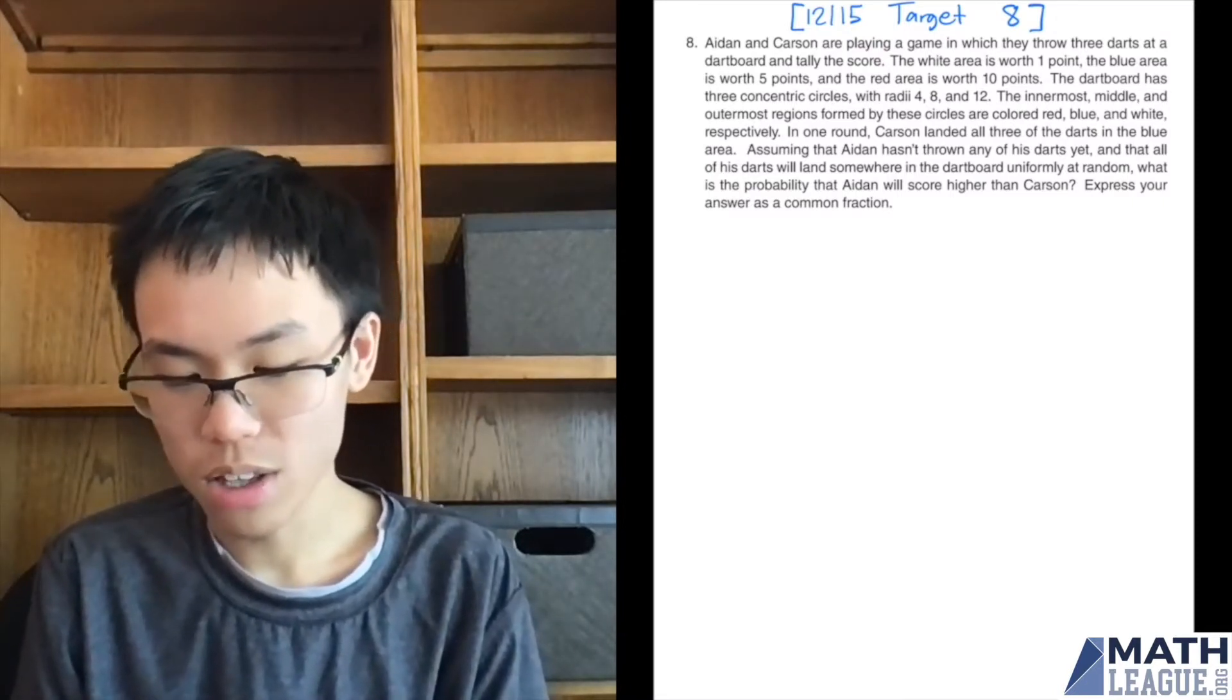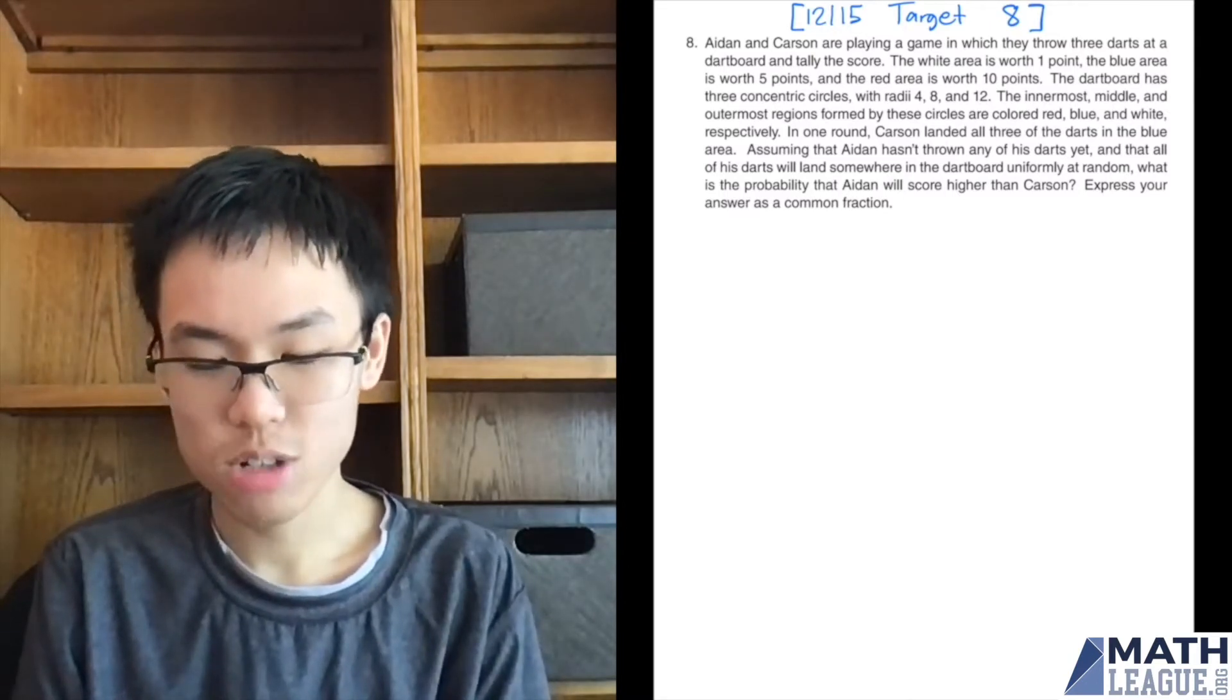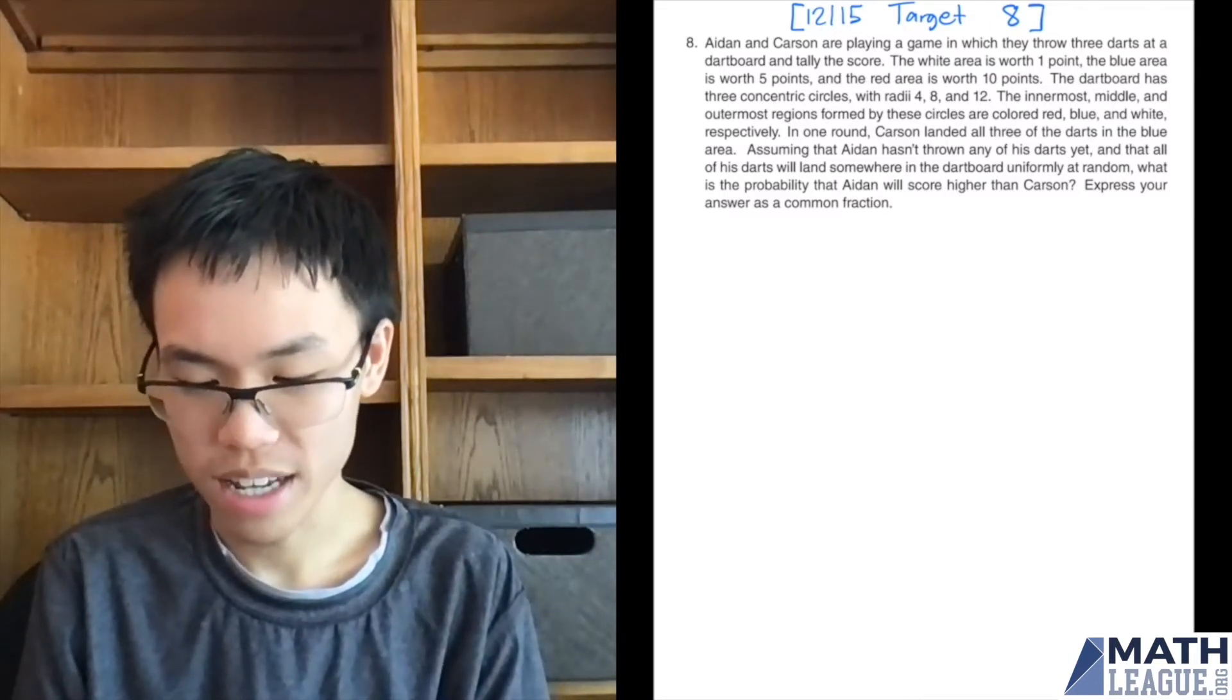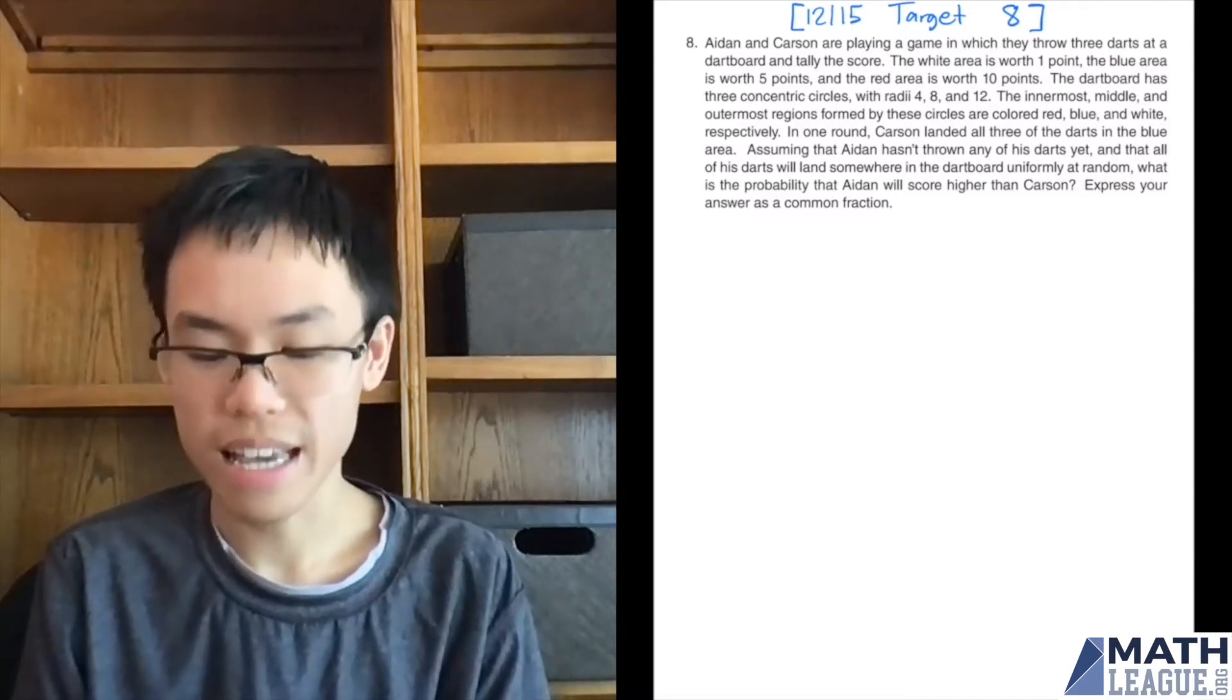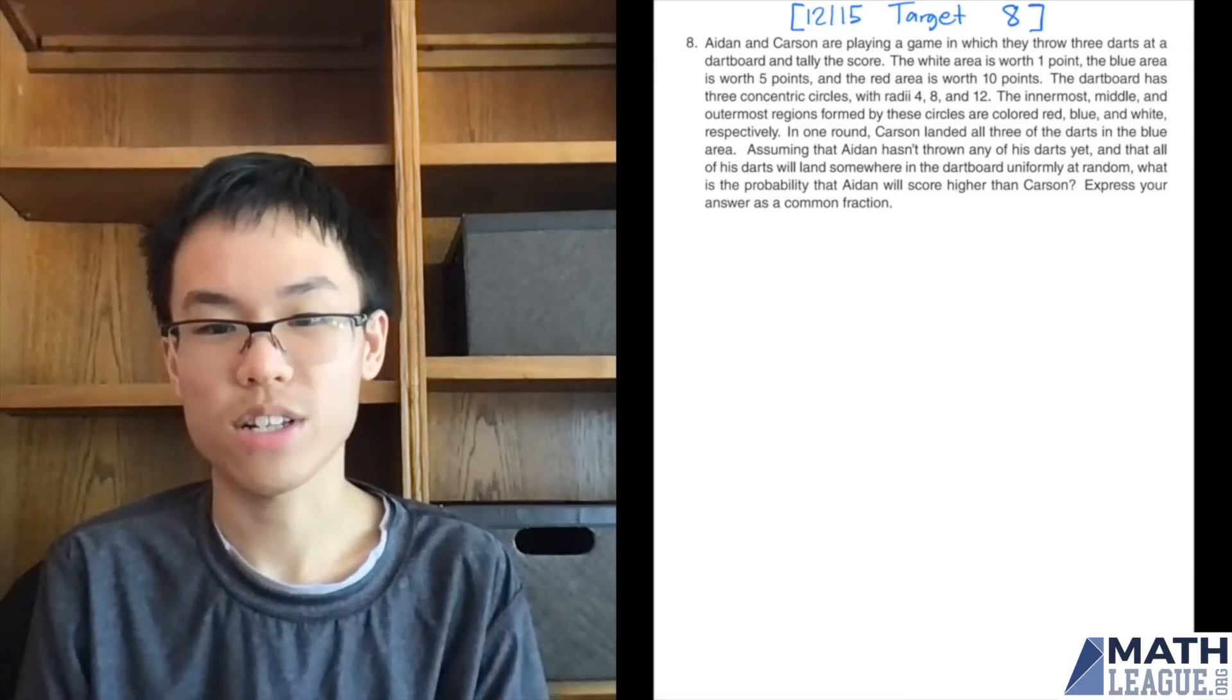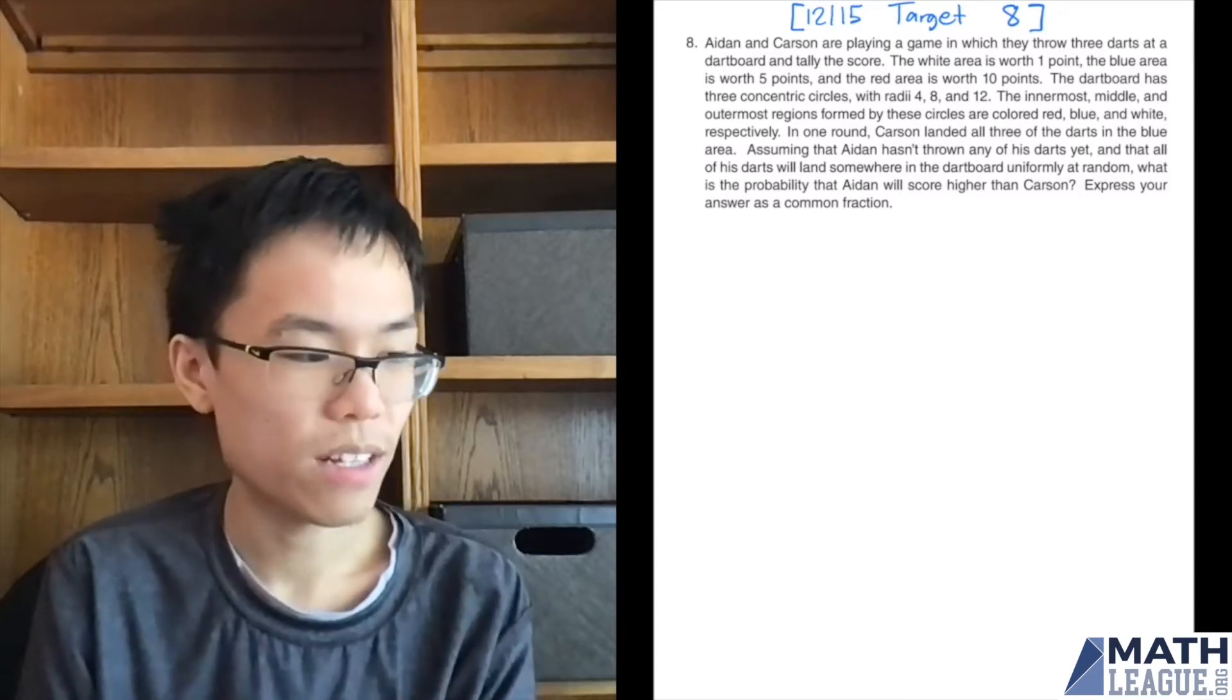In one round, Carson landed all three of the darts in the blue area. Assuming that Aiden hasn't thrown any of his darts yet, and that all of his darts will land somewhere in the dartboard uniformly at random, what is the probability that Aiden will score higher than Carson? Express your answer as a common fraction. That's a lot of text.